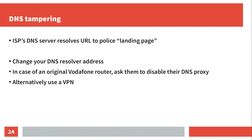In the case of Vodafone, if you had an original Vodafone router, you also had to call their helpdesk and ask them to disable the DNS proxy, which they actually did. Alternatively, you could use a VPN.